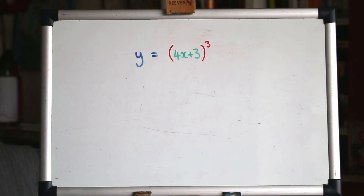Please do grab a pen and paper and do the workings yourself, pausing the video and rewinding as you need. Let's get started. Here's our first example of a function that we would differentiate using the chain rule. We use the chain rule when it's a function of a function.